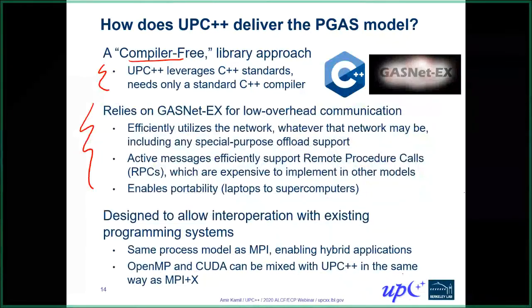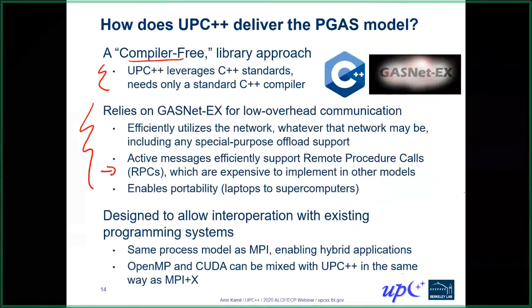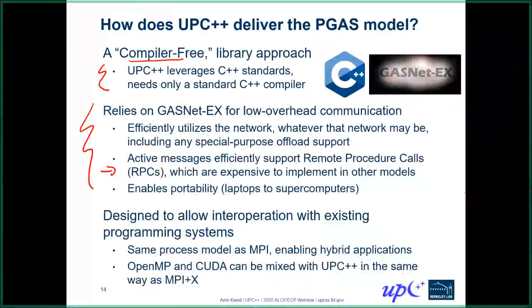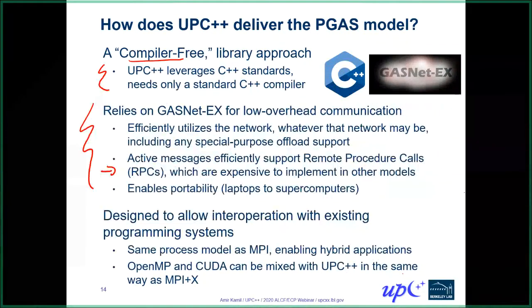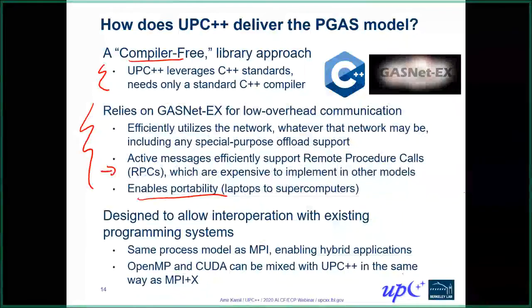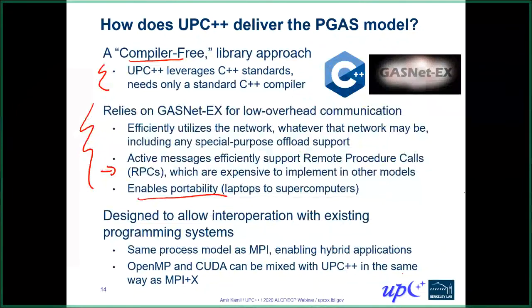We already saw numbers comparing GasNet-EX to MPI3 for microbenchmarks, which motivates using GasNet rather than MPI3-RMA or some other one-sided communication library. But another important reason is that one of the key features of the UPC++ model is remote procedure call, and GasNet provides active messages that allow us to support this very efficiently — something we don't see in models like MPI3. The GasNet developers have done extensive work to make it a portable library across laptops to supercomputers, handling efficient communication and active messages tailored to each system and network.